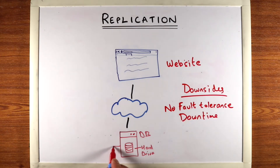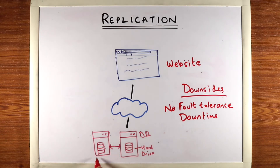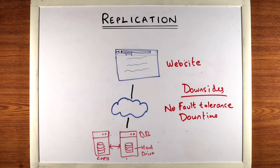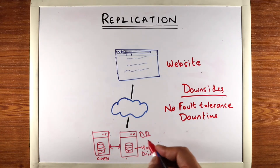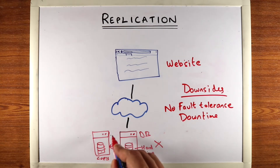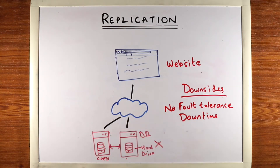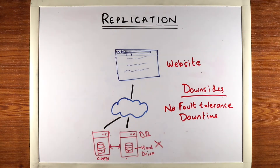Here's a solution: you add another machine which is a true copy of the first machine's hard drive, so all the data on one machine will also be on the other. If one machine goes down, the other can take over and serve requests for the website. This is called replication — we're replicating one hard drive into another.